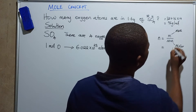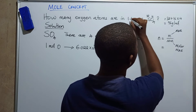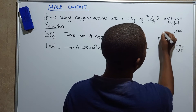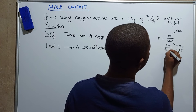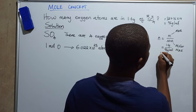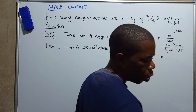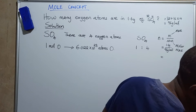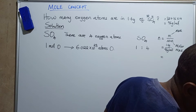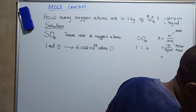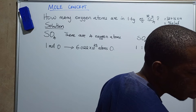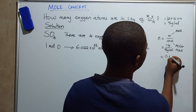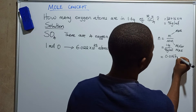So here we write: mass is 1.6 grams over the molar mass of 96 grams per mole. Dividing 1.6 by 96 gives us approximately 0.0167 moles of sulfur trioxide.